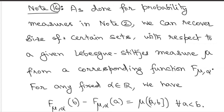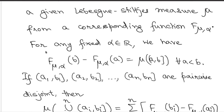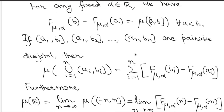As done for probability measures, we can recover the sizes of certain sets under the corresponding measure by writing them in terms of the function. Given a Lévy-Stieltjes measure μ and its corresponding function f_{μ,α}, the increment f_{μ,α}(b) minus f_{μ,α}(a) gives the size of the interval (a, b]. Since μ is finitely additive, the measure of a finite disjoint union of such intervals equals the sum of the corresponding increments.